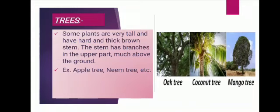Now about trees. Herbs are small, short-sized plants; shrubs are medium-sized plants. Trees are very tall and have a hard and thick brown stem called a trunk, and several branches arise from that stem or trunk. Trees are the largest of all plants — in fact, the largest of all living things — like mango tree, neem tree, apple tree and peepal tree.